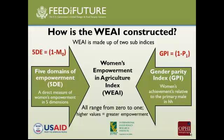From a technical perspective, we make two indices. One is called the 5DE, for five domains of empowerment, and the other is called the GPI, or Gender Parity Index. The 5DE is based on the M0, the Alkire-Foster methodology, and the GPI is based on the poverty gap of the Foster-Greer-Thorbecke class of measures. Both indices range from 0 to 1, with higher values meaning greater empowerment. The final index is a weighted sum of these two, but it's the individual sub-indices that have meaningful interpretation.